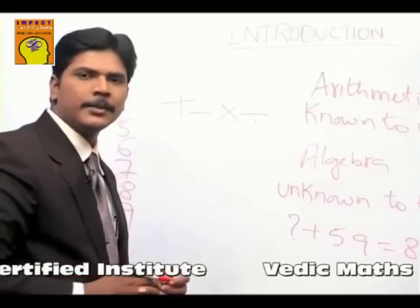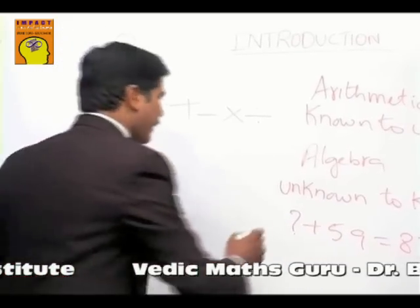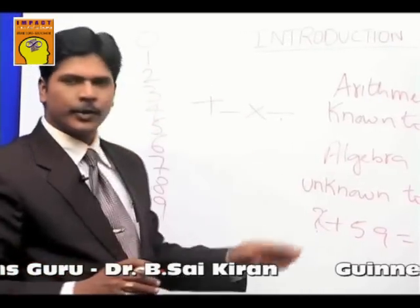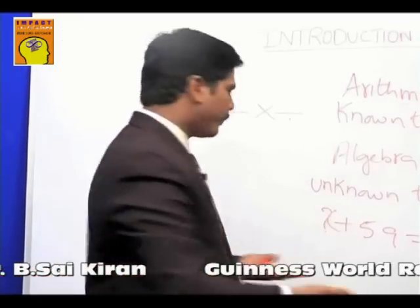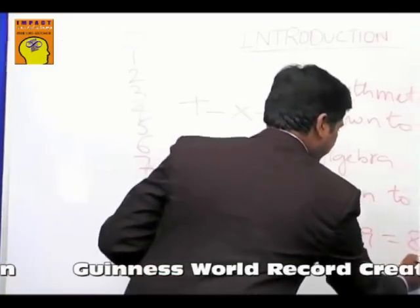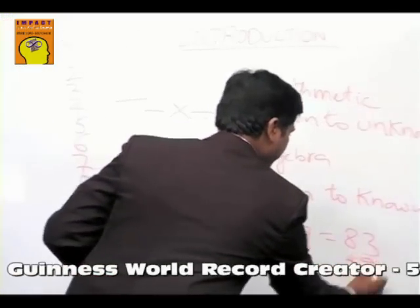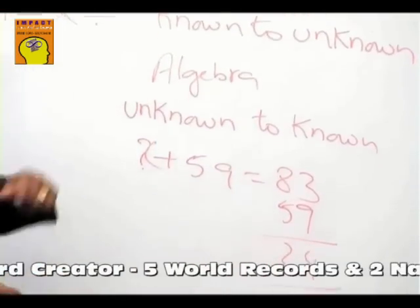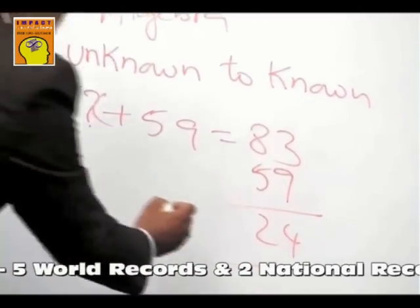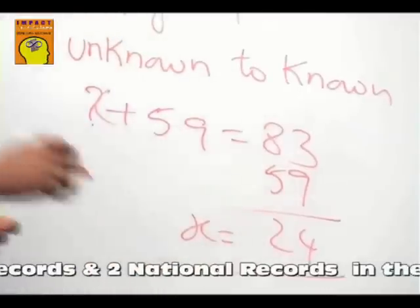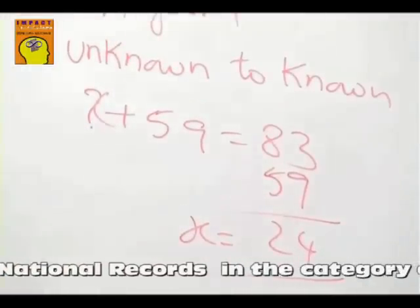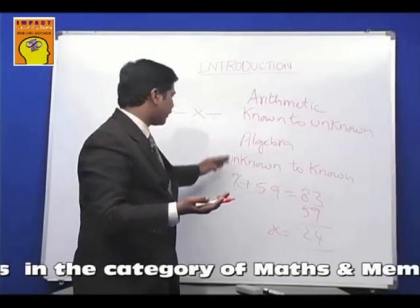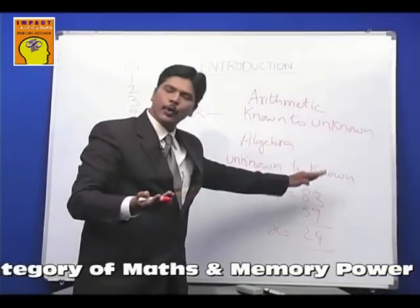The same question in terms of an algebraic expression is written like this: X plus 59 equals 83. In the ordinary method, we calculate X equals 83 minus 59, so you get 24 — X is equal to 24. That X is also a number — it was an unknown number. So algebra is trying to calculate unknown value to known value.